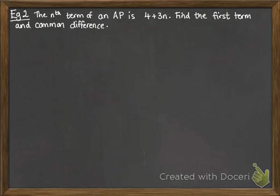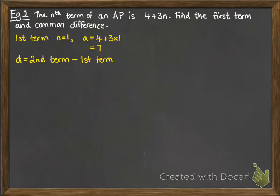The nth term of an AP is 4 plus 3n. We're going to find the first term and the common difference. So, this time, we're given what the nth term is. So, first term is when n equals 1. So, we just put that into our formula. So, A would be 4 plus 3 times 1, which is 7. Now, for the common difference, we just need to know the second term, so that we can do the second term minus the first term and see what the difference is. So, the second term is 4 plus 3 times 2, which is 10. So, the difference is 3.